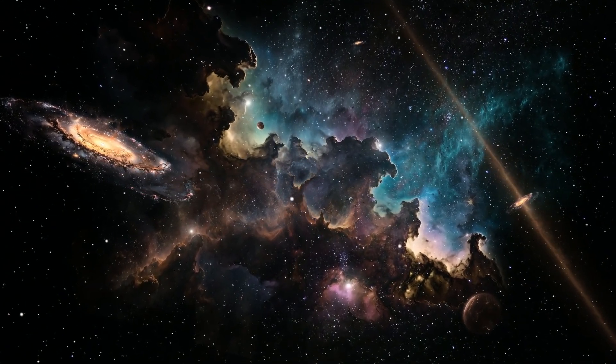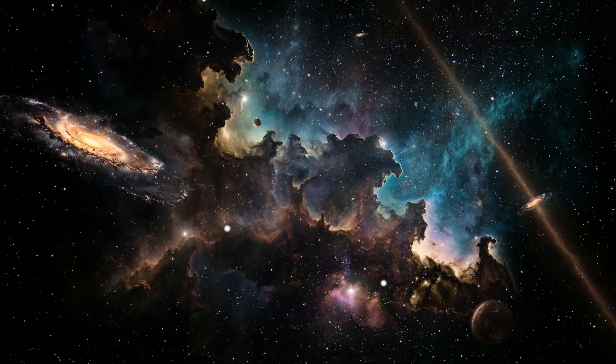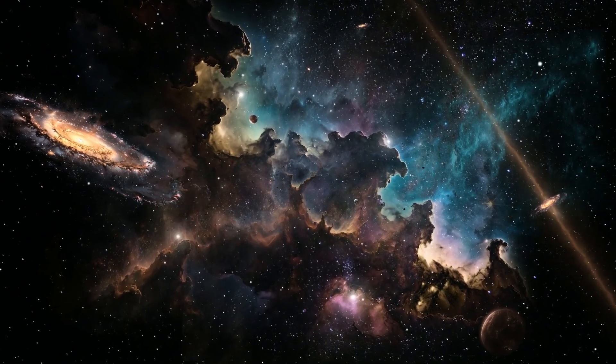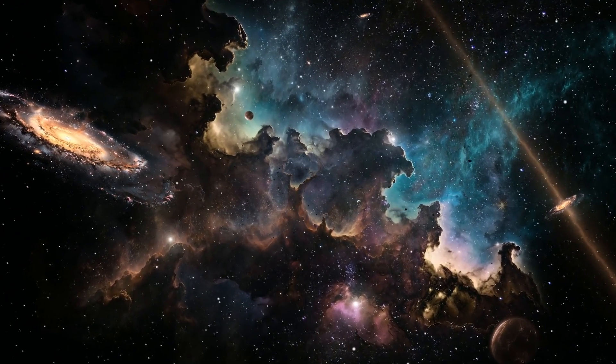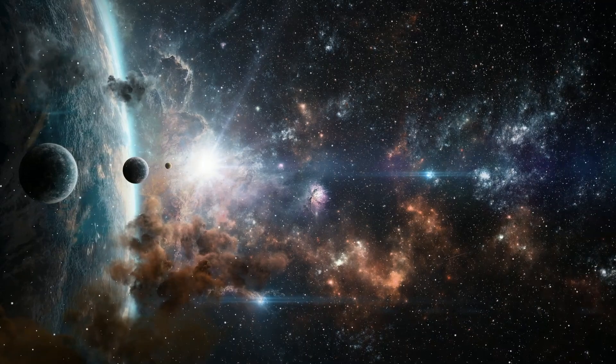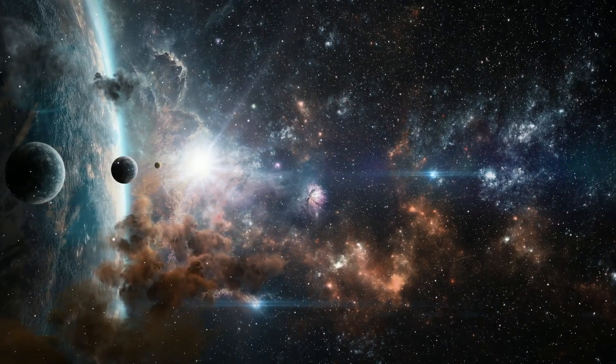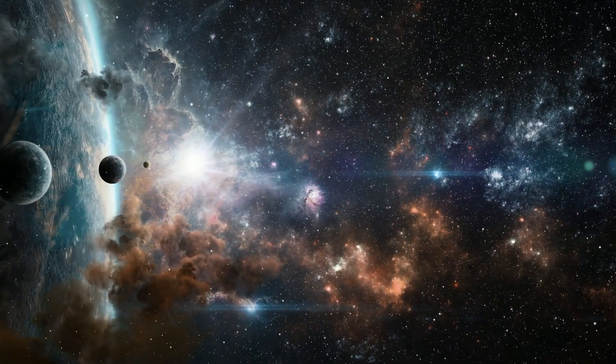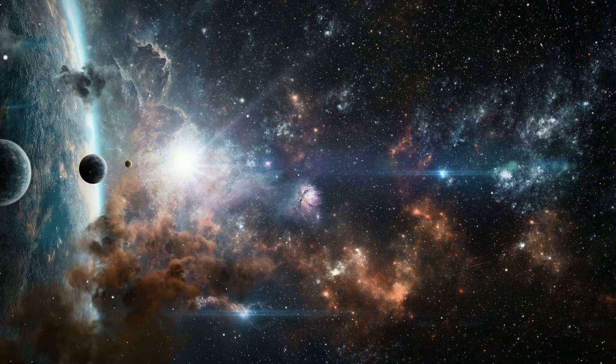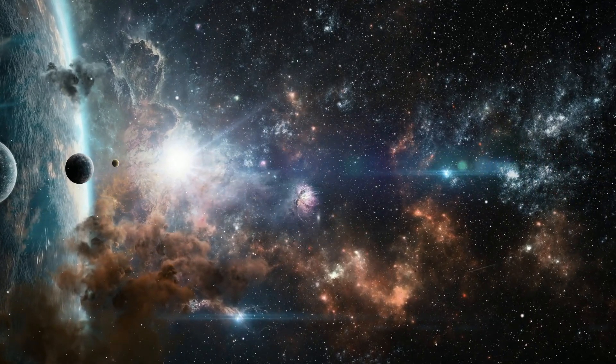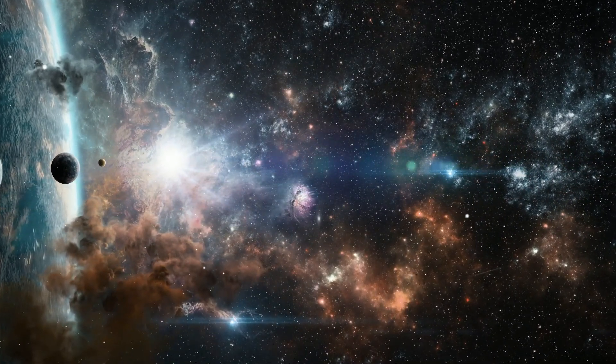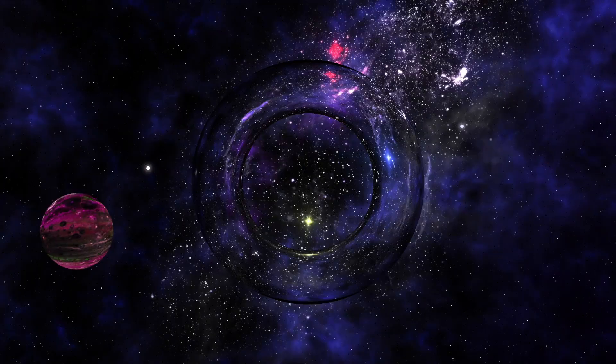60 million years before the end, galaxies begin to break free from their gravitational bonds. The Milky Way disintegrates, the stars scatter. 30 minutes before the end, our solar system unravels. The sun is torn away from the planets. The planets themselves spiral apart.